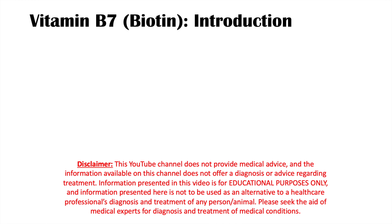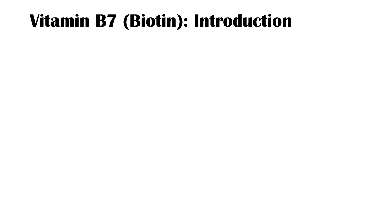Vitamin B7, or biotin, is required for a variety of different processes in our bodies. If there is a deficiency of biotin, it will lead to a variety of signs and symptoms. In this lesson, we're going to talk about what biotin is, where we get it, and the signs and symptoms that can occur with a biotin deficiency.